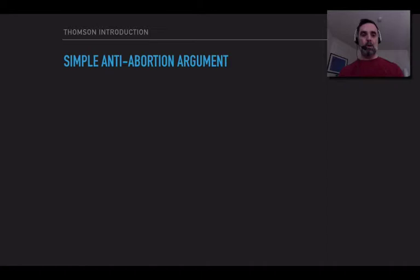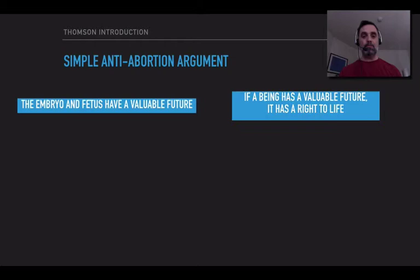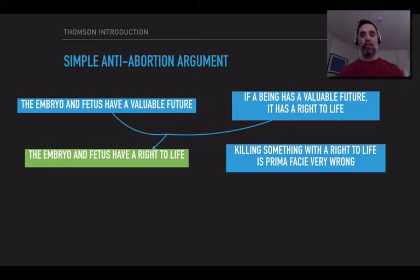Let's start by reminding ourselves of the anti-abortion argument, the pro-life argument that we looked at in the last module. We're going to look at a slightly different version of it, an expanded version of it, because it will help to expand it to see how Thompson's criticism interacts with it. So we have Marquis' observation that the embryo and fetus have a valuable future. And then we can say if a being has a valuable future, it has a right to life, which means that the embryo and fetus have a right to life. And then we can say that killing something with a right to life is prima facie very wrong.